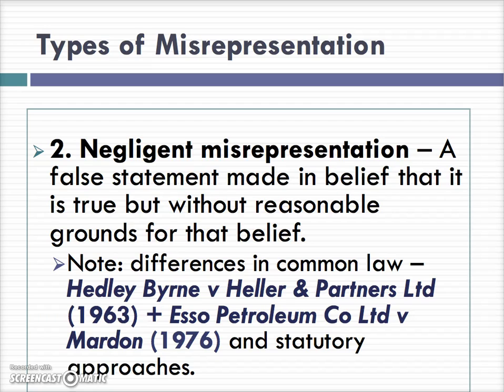This category of misrepresentation was essentially created in the case of Hedley Byrne and Heller. It was essentially about a statement given by a bank as to the creditworthiness of a company. The statement turned out to be untrue. However, it was given with the express proviso that the bank would not assume any liability for the correctness of its statement. So, because of this proviso, the bank did not in fact incur any liability. However, again in obiter, the court held that had it not been for this proviso, the bank would have been found liable for the negligent statement it made as to the creditworthiness of that other party.